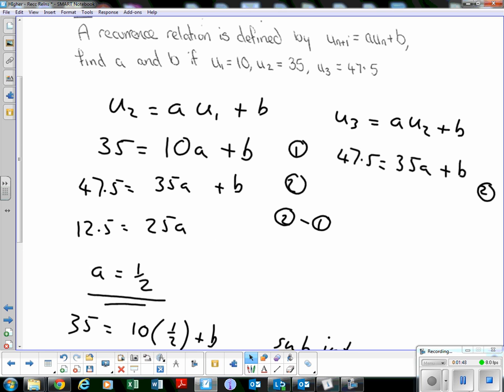So from doing equation 2 subtract equation 1, we have 12.5 = 25a. Divide through by 25, and a will be 12.5/25, which is just 1/2.